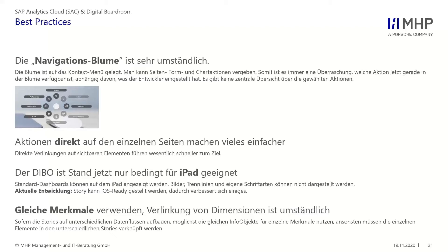Andererseits kann man für die Navigationsblume auch eine Lanze brechen: Wenn man diese drei großen Touch-Bildschirme benutzt – wer die Möglichkeit hatte, in Walldorf das zu sehen, das Boardmeeting der SAP findet tatsächlich in solchen Digital Boardrooms statt – kann man mit einem Touch auf dem Bildschirm die Navigationsblume aufrufen. Derjenige, der präsentiert, kann vorne stehen und selbst den Digital Boardroom steuern, ohne eine Maus oder einen Pointer in der Hand zu haben. Er weiß ja im Regelfall auch, wo er seine Aktion hingelegt hat.